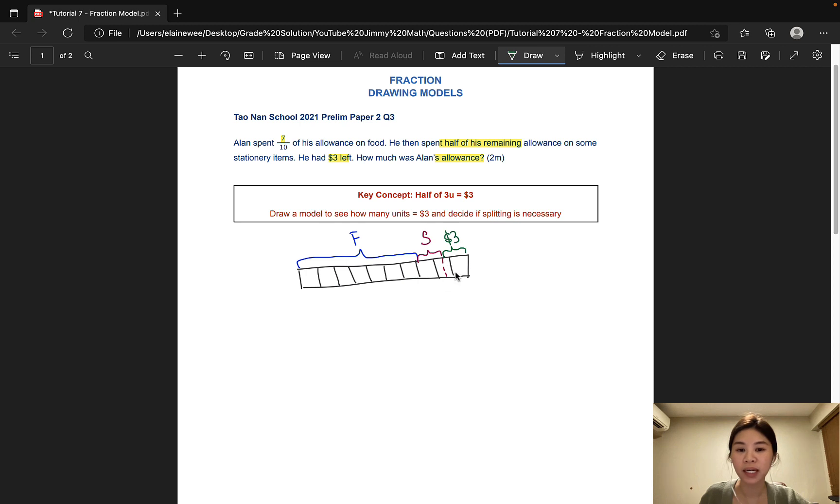Now the problem is that this particular unit here has been split into two halves, and it is of a different size from the remaining units. So let's just go ahead and split all the units up into two halves as well. In doing so, we have equal units throughout, and that is when we can start solving the question.